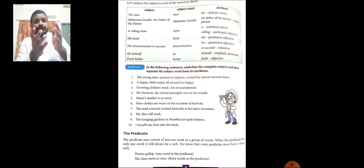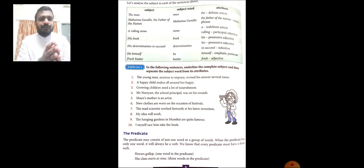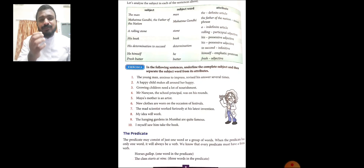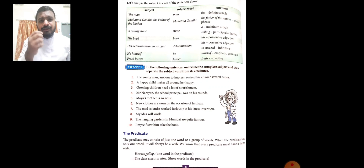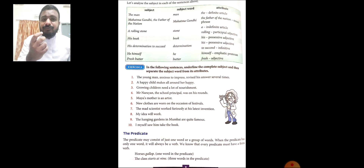Now look at the fourth example: His book is really good. The complete subject is his book, and the subject word — the most important word — is book. His is a possessive adjective used as an attribute. And look at the last sentence: Fresh butter tastes wonderful. The subject is fresh butter. The subject word is butter, and fresh is being used as an adjective attribute.